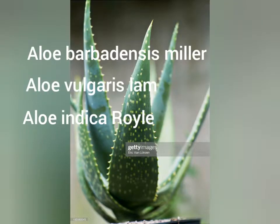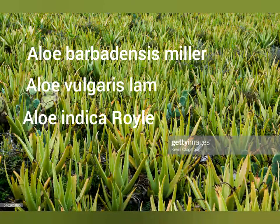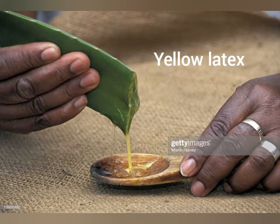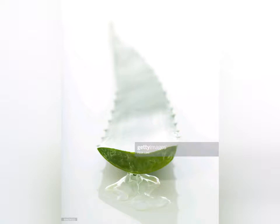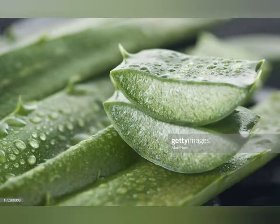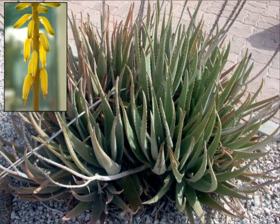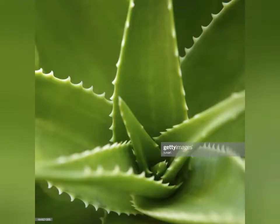Aloe vera has many synonyms, including Aloe barbadensis Miller, Aloe vulgaris Lam, and Aloe indica Royle. The sticky latex liquid is derived from the yellowish-green pericyclic tubules that line the leaf — the main part yielding laxative anthraquinones. These plants are indigenous to South America and South Africa but are now cultivated worldwide, except in tundra, deserts, and rainforests. It takes approximately four years to reach maturity and has a lifespan of about 12 years.